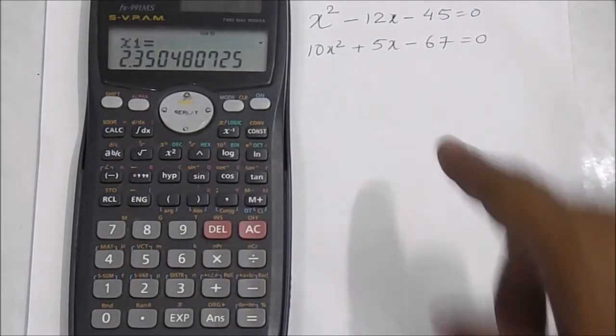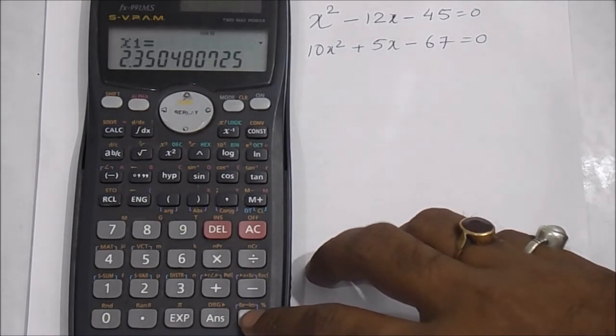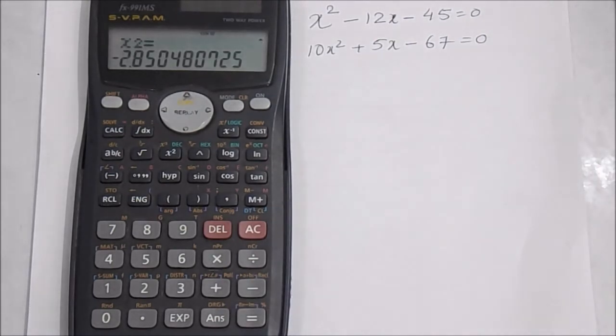'c' is -67. Press -67, then equals. You'll get x₁ = 2.350480725. Press equals again for x₂ = -2.850480725. This is how we can solve any quadratic equation using a scientific calculator, the FX-991MS model.